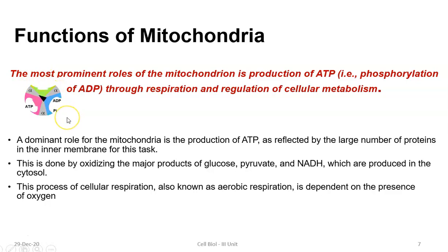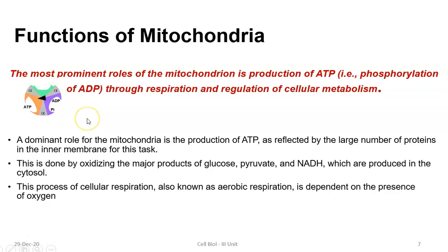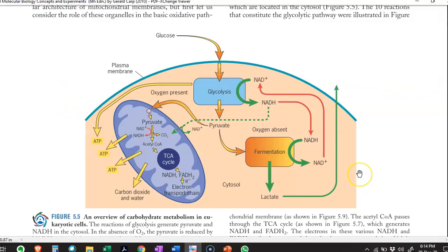This GIF is a depiction of that particular enzyme's function. This process takes place through respiration and regulation of cellular metabolism. This image also shows the same process: glucose enters into the cell and first goes through the cycle of glycolysis, which results in the production of pyruvate molecules.